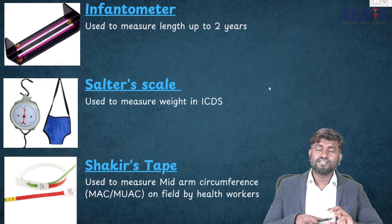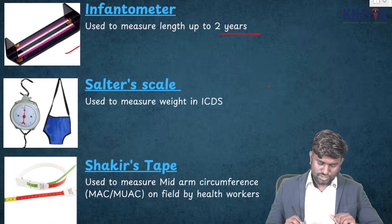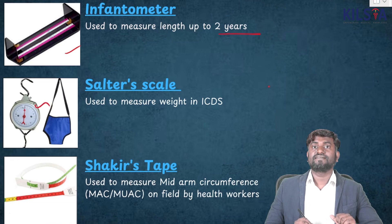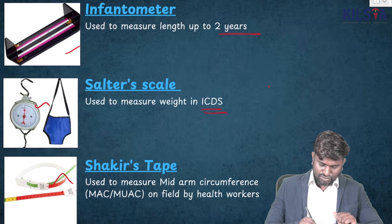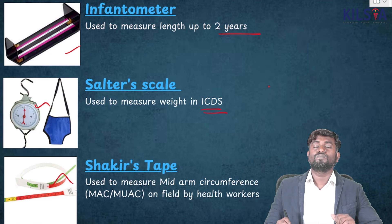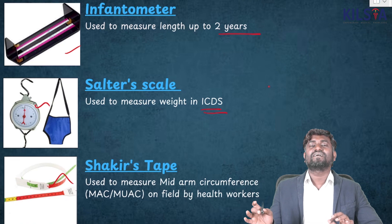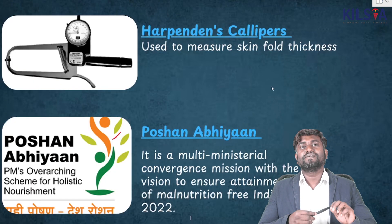This instrument is going to be called Infantometer, used to measure the length of babies up to about 2 years old. This is called the Salter Scale, used to measure weight in ICDS. And this is going to be Shakir's Tape, used to measure mid-arm circumference.